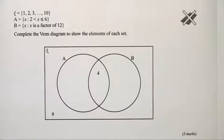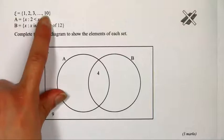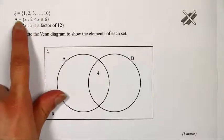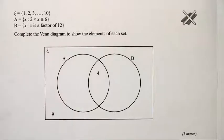This is a question on Venn diagrams. We're told the universal set is the numbers from 1 to 10, and we're given descriptions of set A and set B. We want to complete the Venn diagram to show the elements of each set.